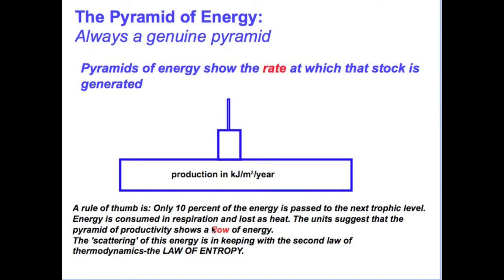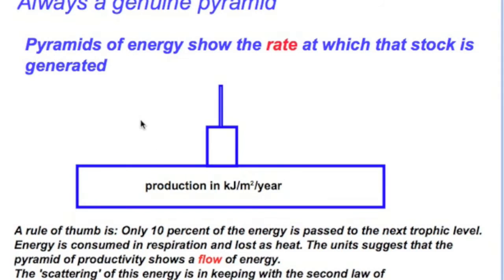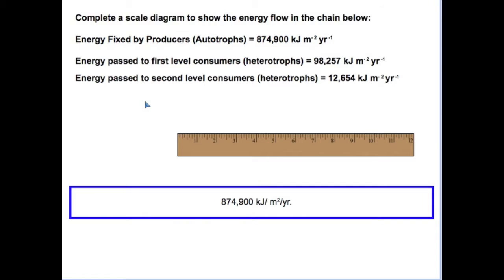With significant amounts of losses happening due to consumption in respiration and losses as heat, bear in mind also that some of this energy that is fixed by autotrophs is passed to decomposers, which is not included in this particular pyramid.